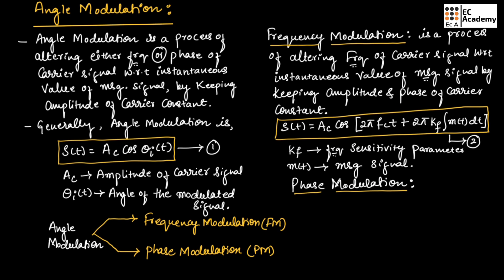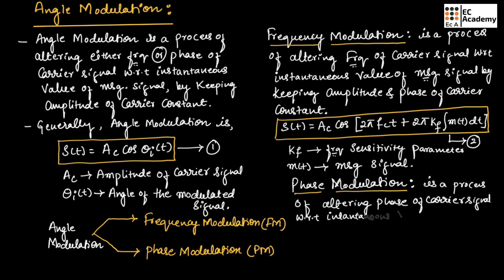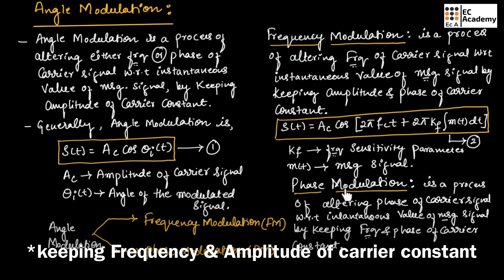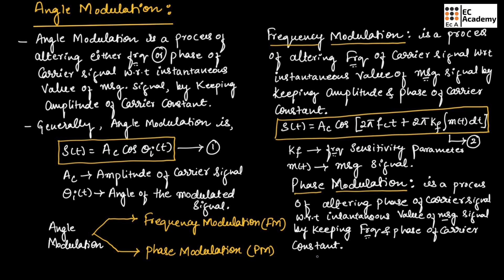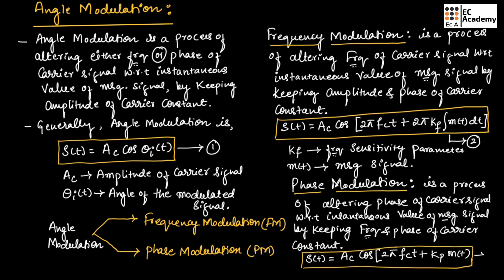Phase modulation is a process of altering the phase of the carrier signal with respect to the instantaneous value of the message signal, by keeping the frequency and amplitude of the carrier signal constant. Generally, we can represent phase modulation as S(t) = Ac·cos(2πfct + Kp·m(t)), which we take as equation number 3. This is the general representation of phase modulation.